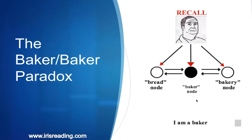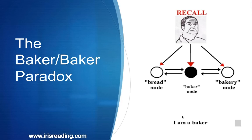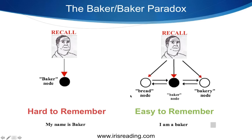Then they take a separate group of participants, introduce them to the same person, but tell them: 'This person is a baker.' A few days later, those participants are asked what they remember about this person — not their name, but their occupation. The funny thing is, most people remember the occupation. It's almost the absolute flip of the other scenario.